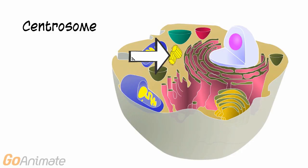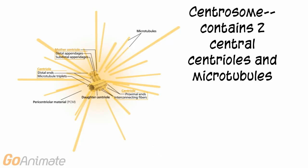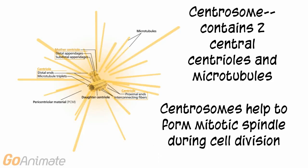Centrosomes are important in cell division. Centrosomes contain two central centrioles and microtubules. Centrosomes help to form the mitotic spindle during cell division, or mitosis.